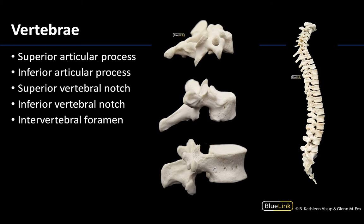Now looking at a lateral view, you can get a better view of the vertebral notches — you can really only see these from a lateral view. Articular processes are going to have projections for which you have those facet joints. A superior articular process will articulate with an inferior articular process of another vertebra. You can see a superior one and an inferior one, and you can see them extending throughout these regions.